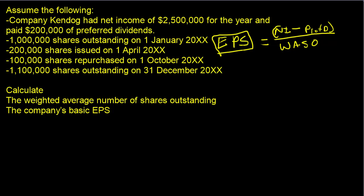These questions can take a while if they're complex, so a lot of times problems are broken up to focus mostly on the numerator, the denominator, or a combination of both but less complex. This problem is an example focusing on figuring out the weighted average shares outstanding.